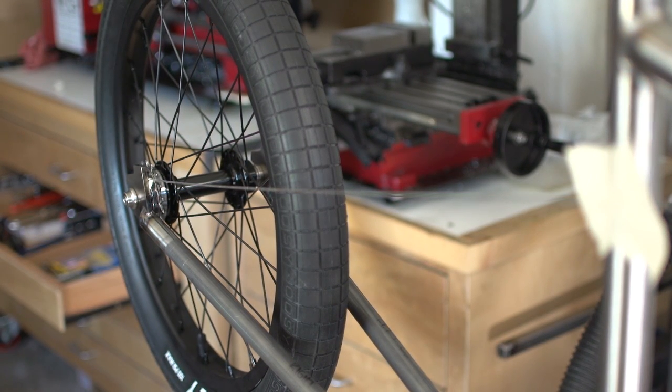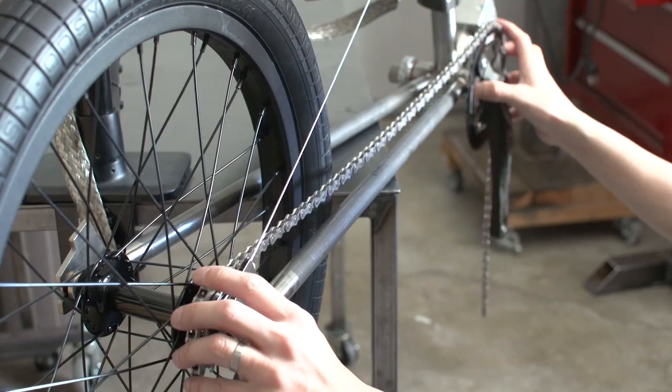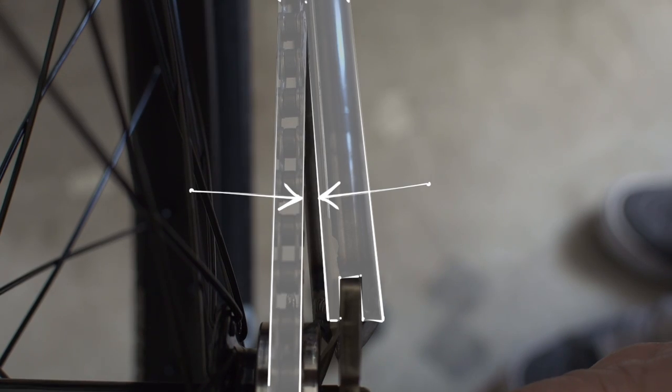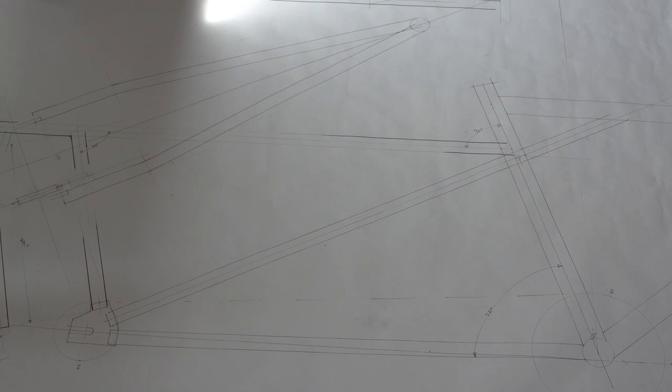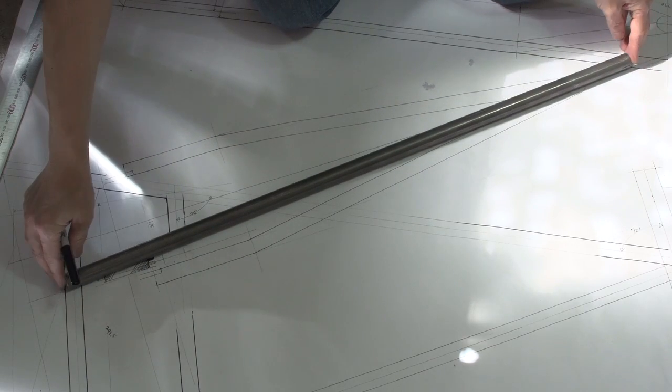Before we start bending, let me tell you why we're doing this in the first place. It wasn't my plan to do this, but after throwing the chain on there and checking the clearance it became apparent that the chain would be too close to the seat stays. Yeah, the chain and the seat stays might make contact in this area, so that's why we're bending the seat stays.